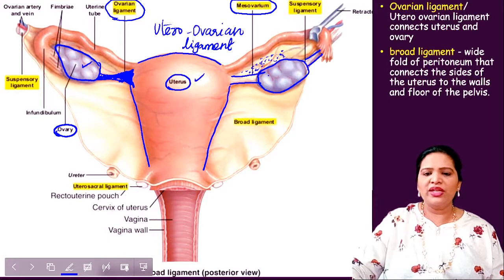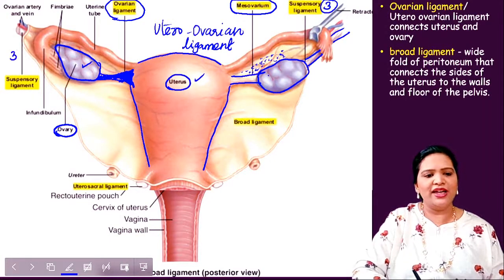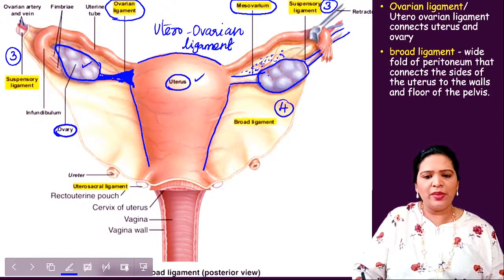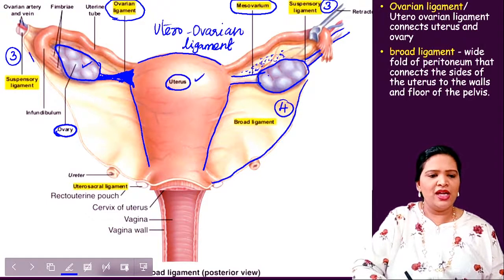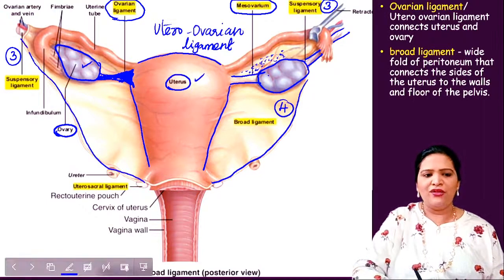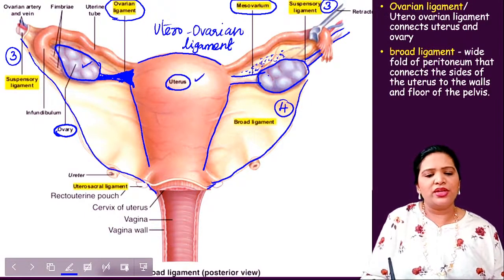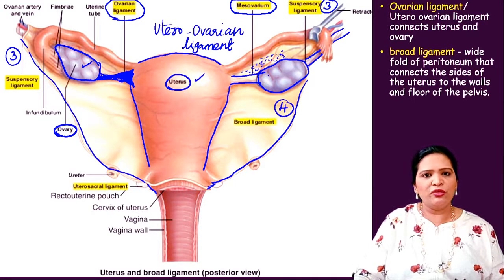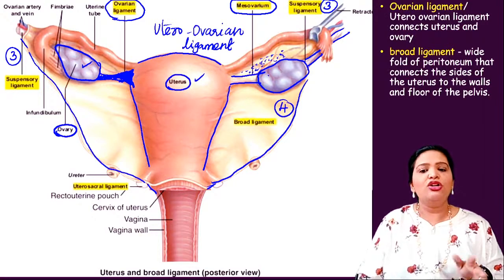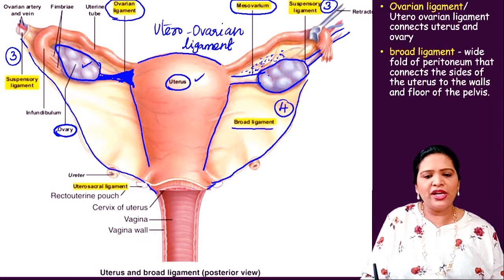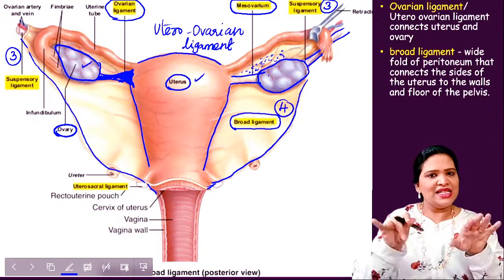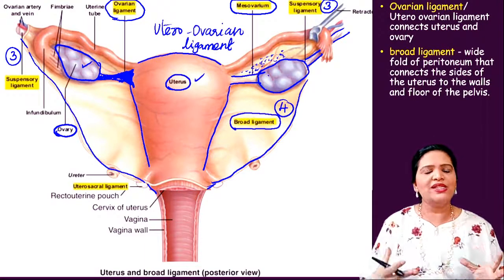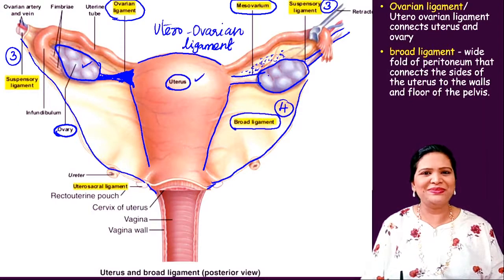There is also a fourth ligament called the broad ligament — a wide, V-shaped fold of peritoneum. It connects the sides of the uterus to the walls and floor of the pelvis. Together, these ligaments — utero-ovarian, meso-ovarium, suspensory, and broad ligament — keep the uterus and ovaries connected to each other and to the pelvic wall.